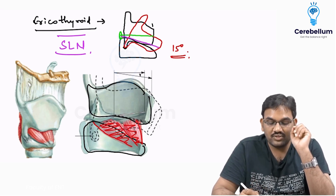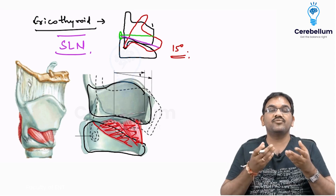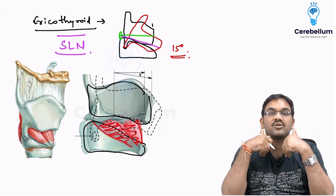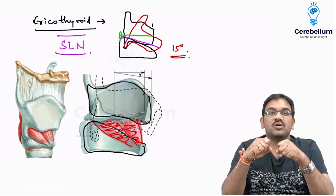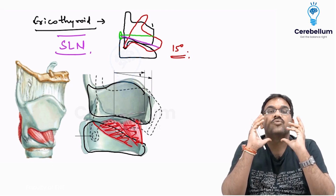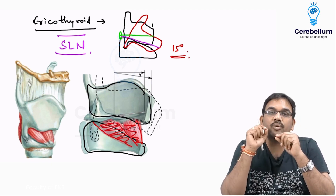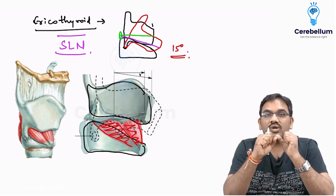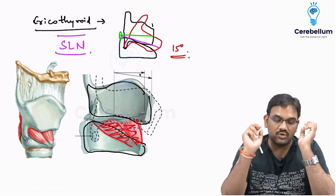The cricothyroid lies in between the cricoid and the thyroid, attaching from the cricoid to the thyroid. Once it pulls downward, the thyroid moves anteriorly and inferiorly. As the vocal cord attaches to the back of the thyroid, it also gets pulled forward, causing stretching of the vocal cords, which tenses them.